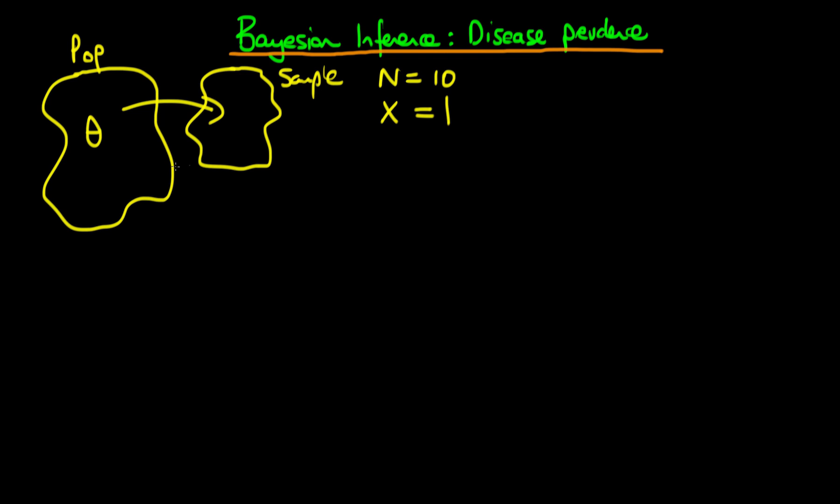So perhaps you can see here that the appropriate model to use for the likelihood of this data, the probability of the data, which in this case is just x given our parameter theta, you might think that perhaps the best thing to use here would be the binomial distribution.